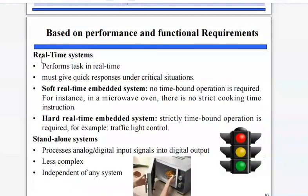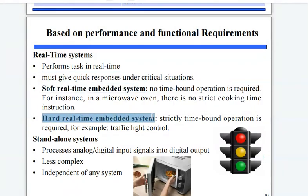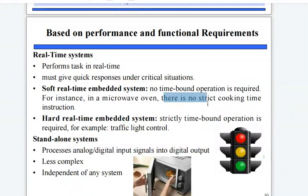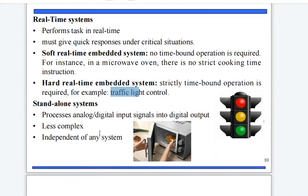Real-time embedded systems perform tasks in real-time and must give quick responses under critical situations. They are further divided into two types: soft real-time and hard real-time embedded systems. In soft real-time, no time-bound operation is required — for example, a microwave oven with no strict cooking time instruction. In hard real-time, a strictly time-bound operation is required — for example, traffic light control.